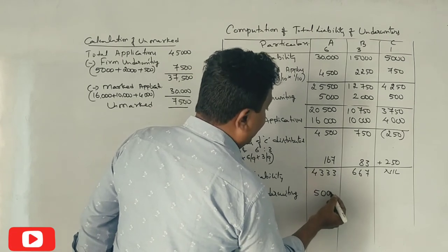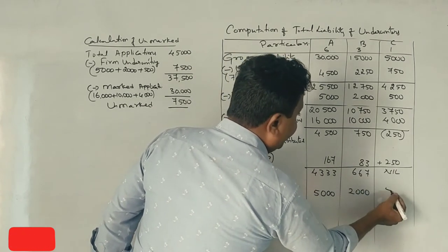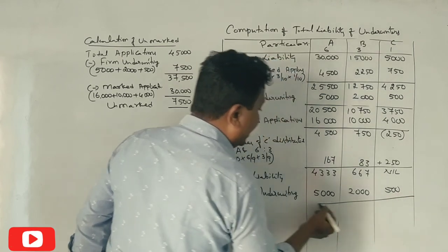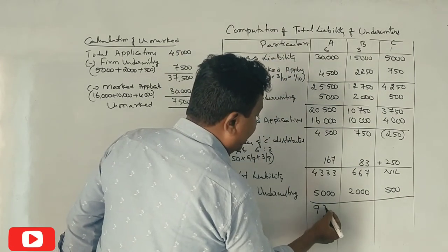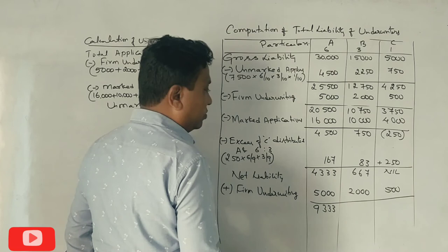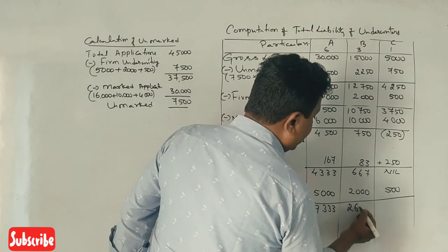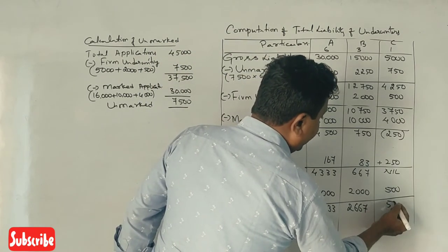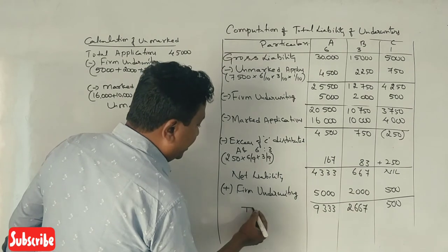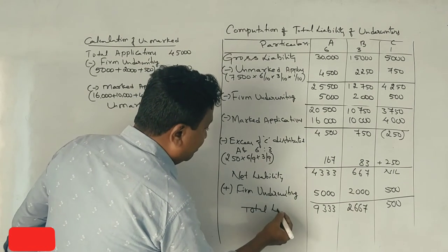This is 5,000, this is 2,500, this is 500. This is the total. This is 2,667, 500. This is the total liability. Correct? This is the total liability.